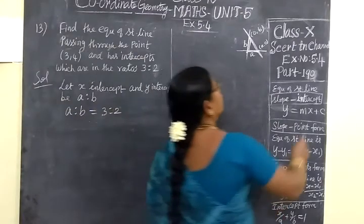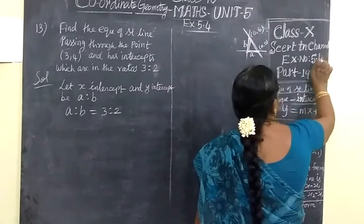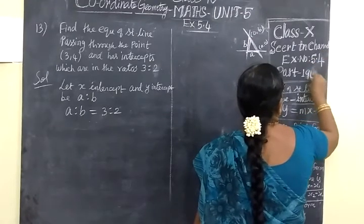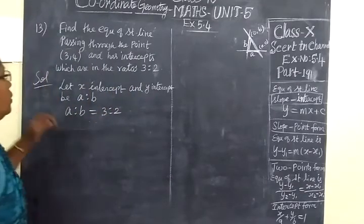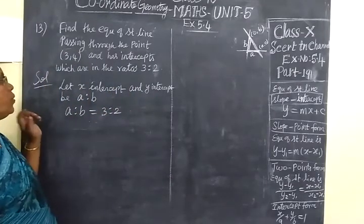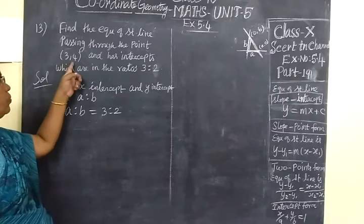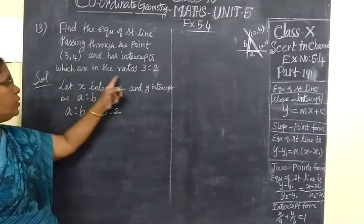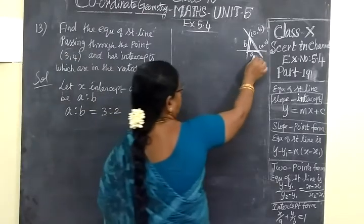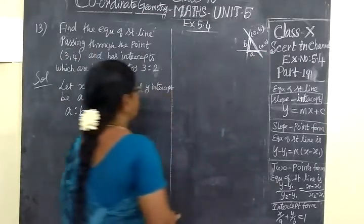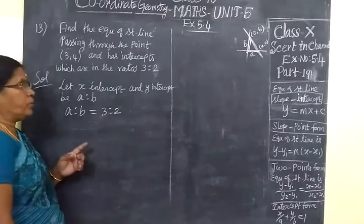Good evening. Next we are going to see problem 191. In part 191, we are seeing the equation of a straight line passing through the point (3,4) and has intercepts which are in the ratio 3 is to 2. The intercepts A and B are in the ratio 3 is to 2.